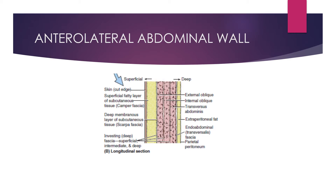Then we have the three investing layers. These are the three flat strap muscles which are the external oblique, internal oblique, and transversus abdominis. After this we have the fascia transversalis, the extraperitoneal fat, and the peritoneal fat — all of which we have already studied.